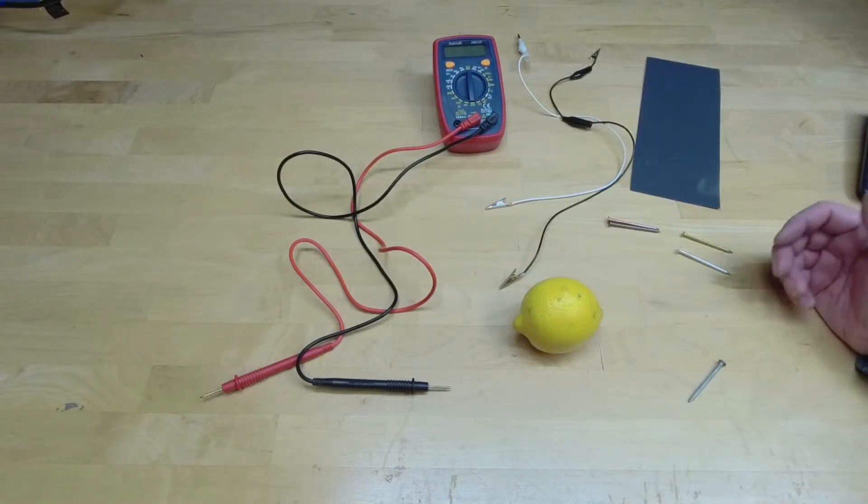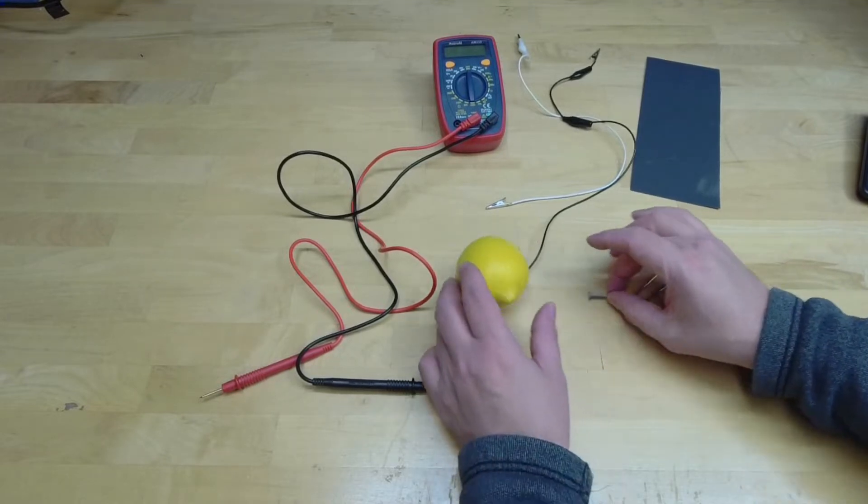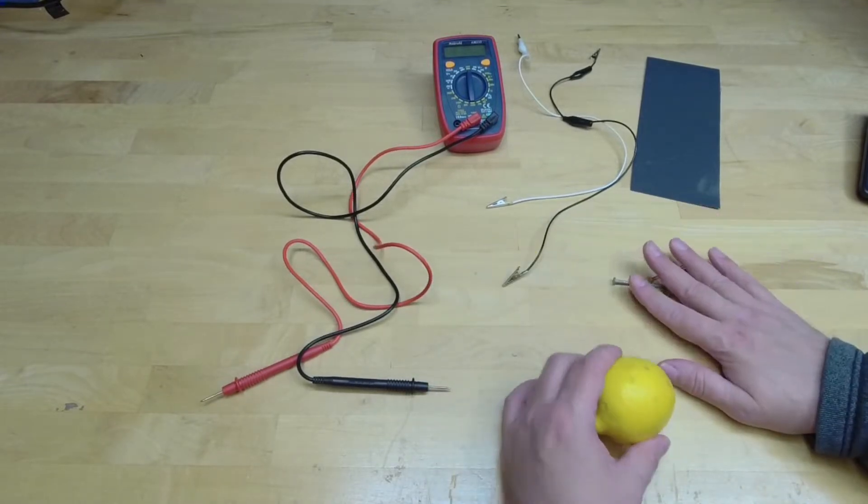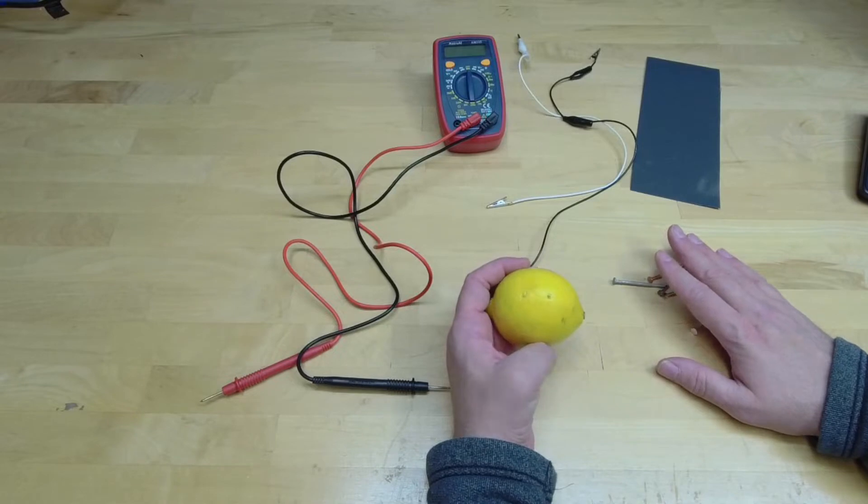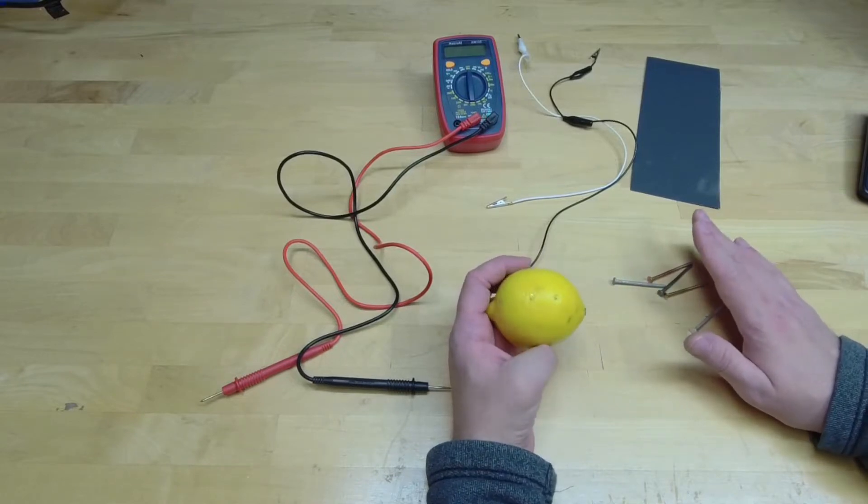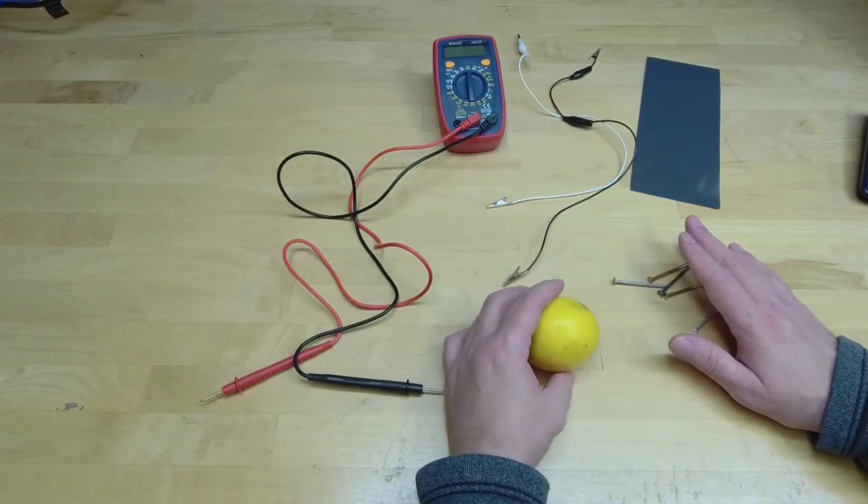For our first experiment, we're going to build a battery using our nails, and we're going to arrange them in various ways. We're going to use a piece of fruit, a potato, a lemon. I'm using a lemon for this experiment.